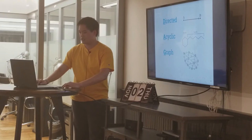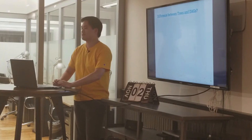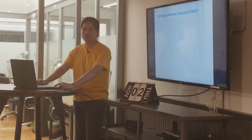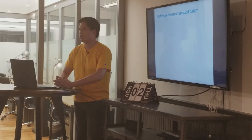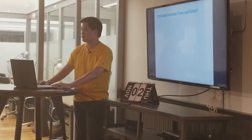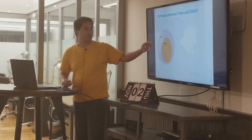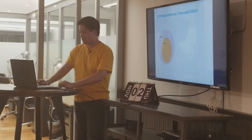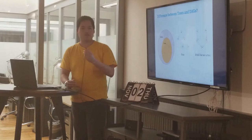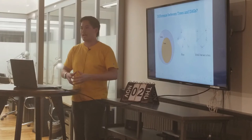What's the difference between trees and DAGs? Trees are actually DAGs as well — all trees are DAGs, but not all DAGs are trees. In a tree, a node has only one parent, but in a DAG you can have multiple parents — for example, node D can have multiple parents, and same with node C.